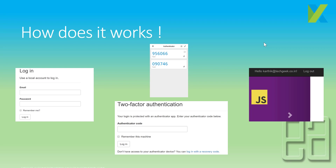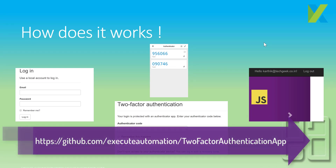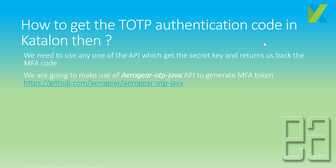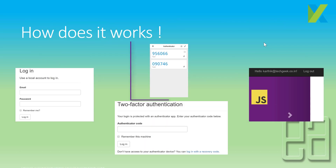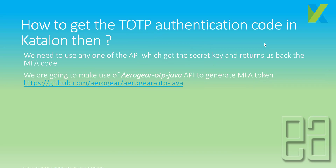I will quickly walk you through the application we have, which is also included in the Execute Automation GitHub repository so you can download it for free. To get the TOTP authentication code in Katalon Studio, we are going to make use of the aerogear-OTP Java API to generate an MFA token for us, by passing the secret key for that particular application's constructor.